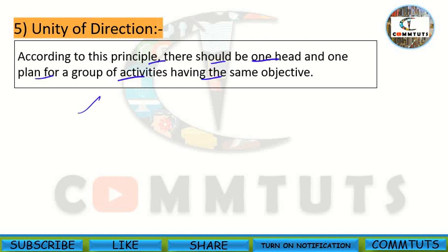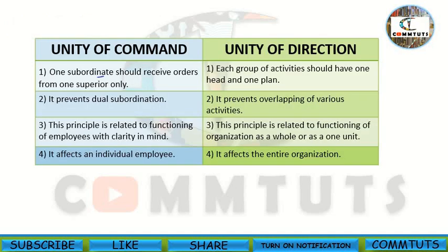Now let's understand the difference between the two principles. Unity of command says one subordinate should receive orders from one superior only, while unity of direction says each group of activities should have one head and one plan. Unity of command prevents dual subordination; unity of direction prevents overlapping of activities. Unity of command relates to functioning of individual employees with clarity of mind; unity of direction relates to functioning of the organization as a whole. Unity of command affects an individual employee; unity of direction affects the entire organization.